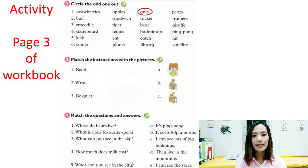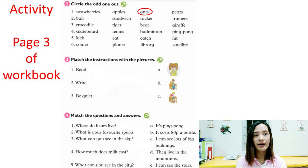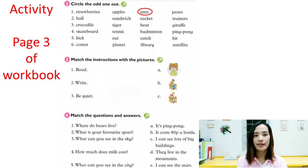Number three: match the instructions with the pictures. We have three commands on the left and three pictures on the right. Match the correct picture with the word. Last part of the activity — number four: match the questions and answers. We have five questions and five answers.